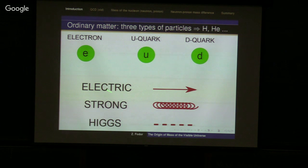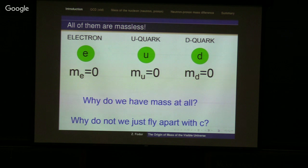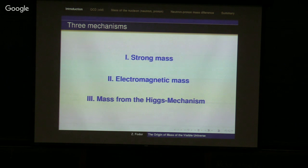These particles have essentially the following interactions which are important for us: electric, the strong interaction, and interaction with the Higgs field. The problem is that on the very basic level of theory, all these particles are massless. So you can ask: why do we have mass at all? Or why do we not just fly apart with the velocity of light? There are three mechanisms I'm going to discuss today which are responsible for that: the strong mass, the electromagnetic mass, and mass from the Higgs mechanism.